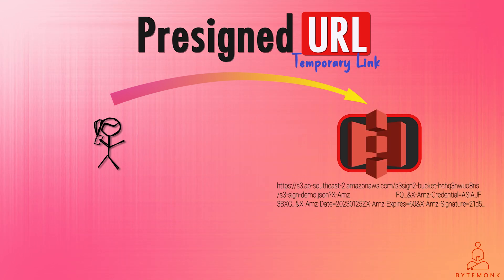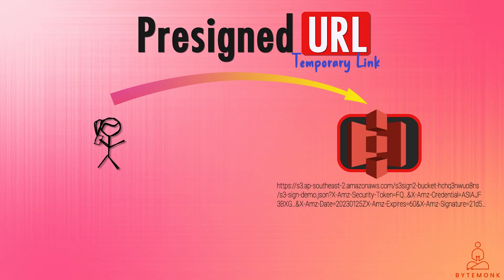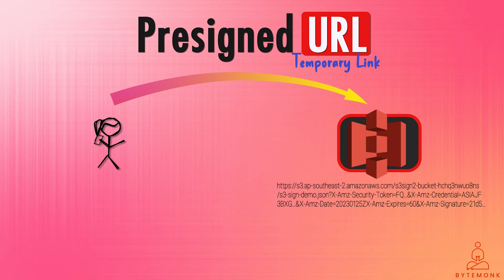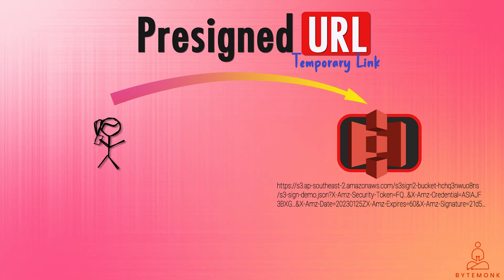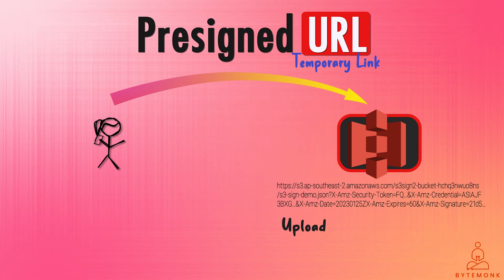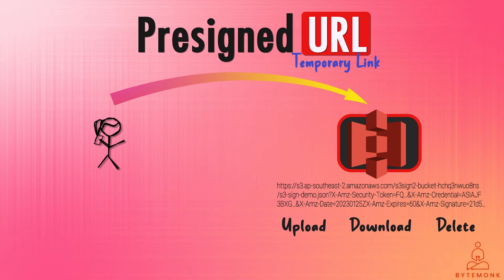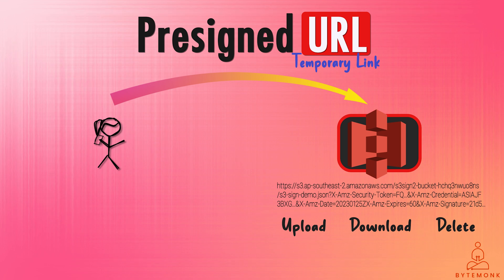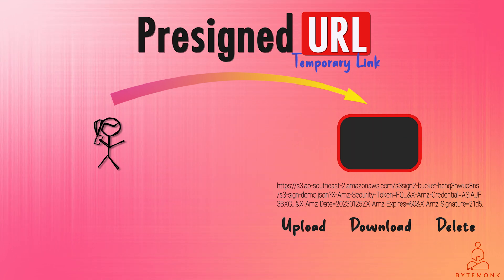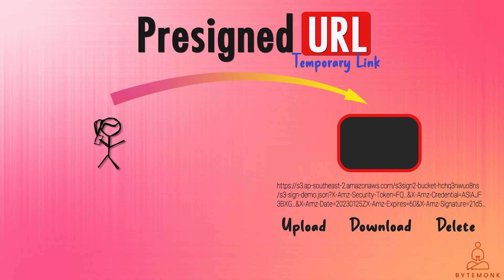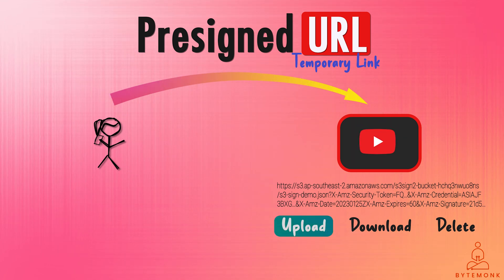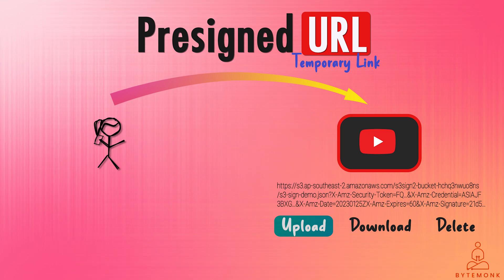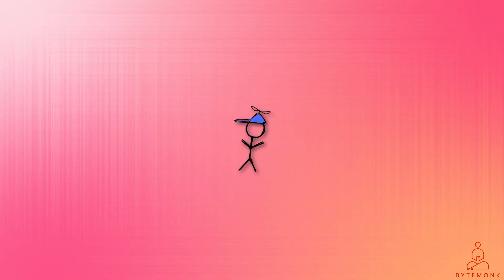A pre-signed URL is usually generated by the cloud storage provider and can be used to perform certain operations on the object or file, such as uploading, downloading, or deleting it. In this video, however, we will focus on the use of pre-signed URLs for uploading video files on YouTube. Let us break down this process.